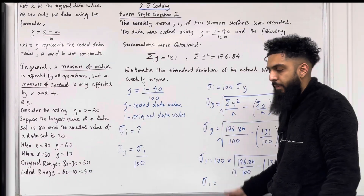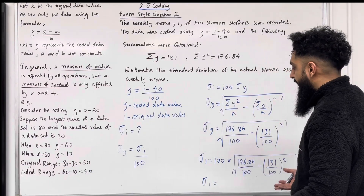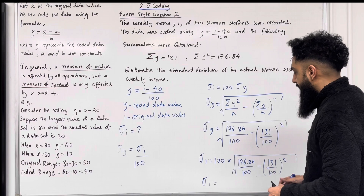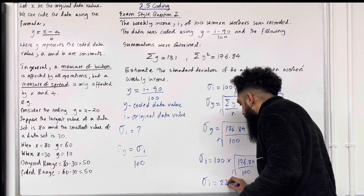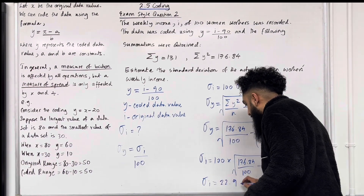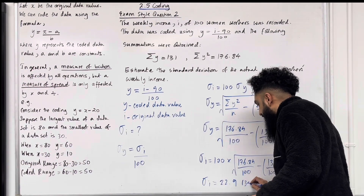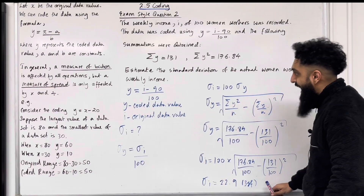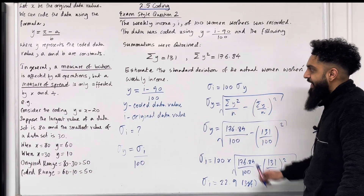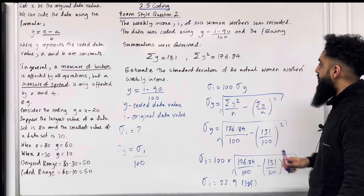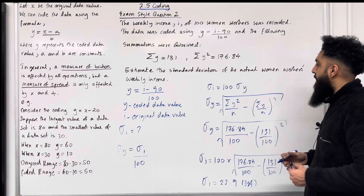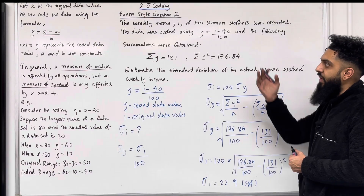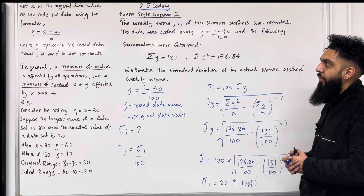Putting this into the calculator and rounding to three significant figures, we get sigma i equals 22.9. That is the standard deviation of the actual women workers' weekly income. This completes exam style question 2.